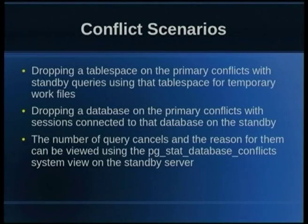If you're trying to drop a database on the primary server, that will make the standby server drop all connections because it has to — if you're dropping a database, you can't maintain any connections to that database on the standby server. So it will just drop all connections and drop the database. If you want to see a report on all those conflicts and how they were resolved, there's a view in Postgres called pg_stat_database_conflicts, which lists all conflicts that happened and what action was taken — whether it cancelled the query or what.